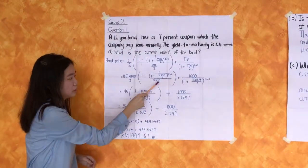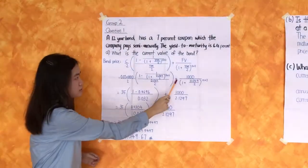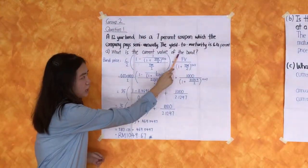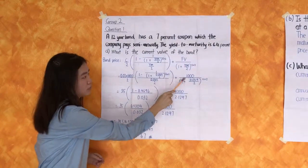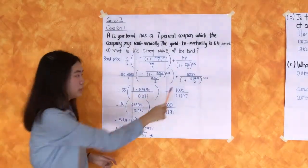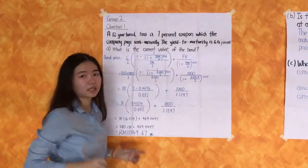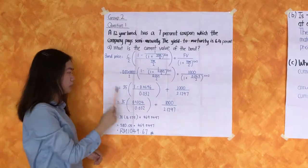And all this PVA formula plus the PV which is the FV 1000 divided by 1 plus YTM 0.064 divided by 2, power by times 12 years times 2, and equal to...